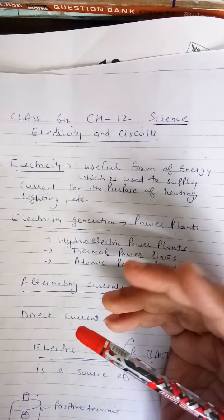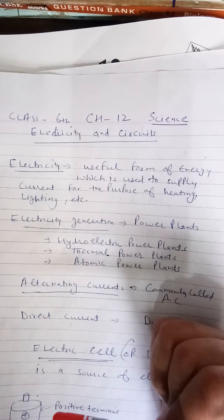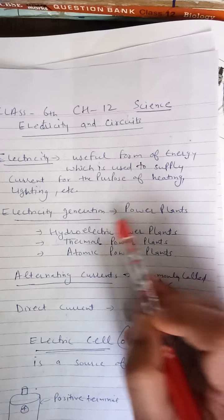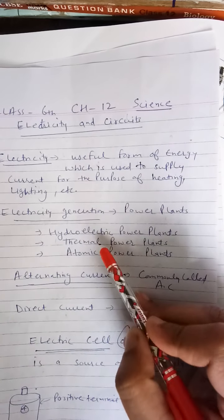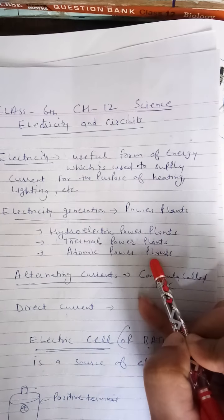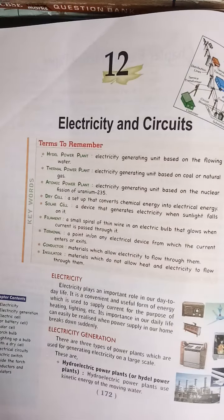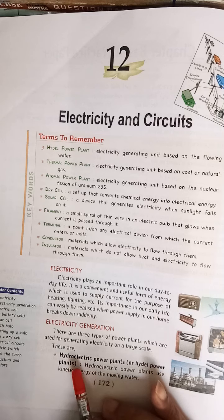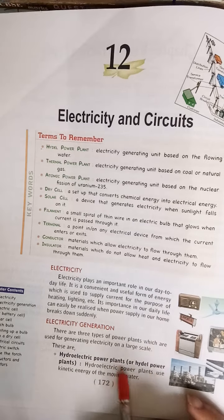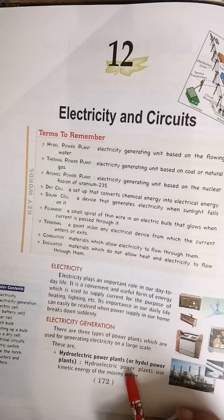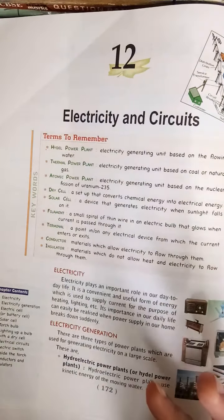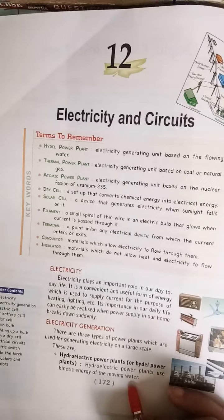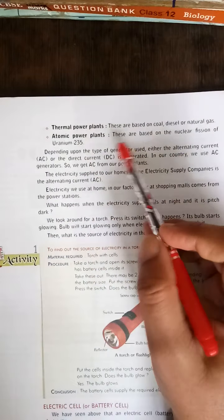Next, how is electricity generated? Mainly electricity is generated in power plants. In our country, electricity is generally produced through hydroelectric plants, thermal plants, and atomic power plants. In a hydroelectric power plant, electricity is produced from the kinetic energy of moving water — water falls from a height onto the turbines of a generator, and electricity is produced.